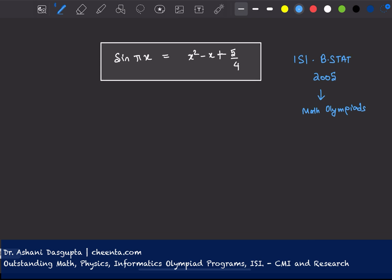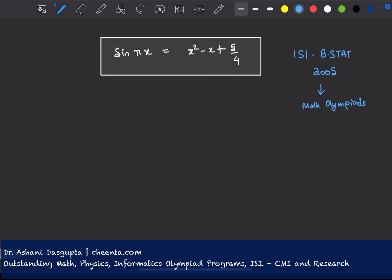So how do we go about it? Let's look at the left-hand side. Sine of pi x. Sine of a number is always less than or equal to 1, so it's between minus 1 and 1. This much we know.